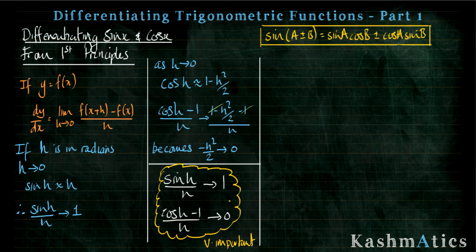Over here in the yellow cloud I've got those two little rules summarized for us to use in our proof later. The other thing we need to know is this identity: the sine of a plus b is equal to sine a cos b plus cos a sine b — and hopefully that's familiar to you, but please get used to using it comfortably when it comes to any kind of trig identity question.